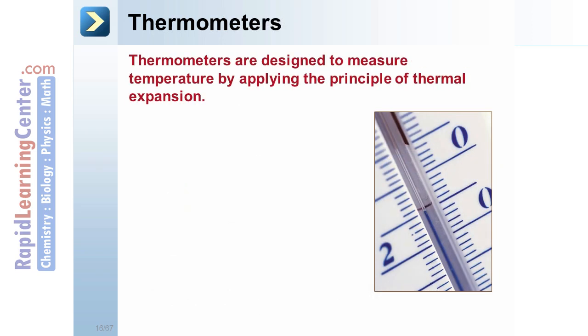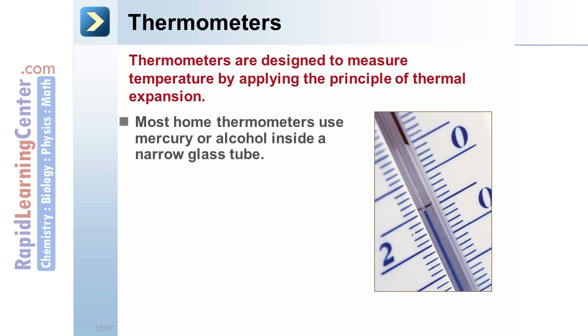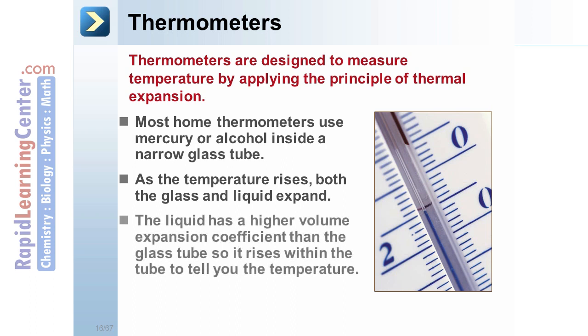Thermometers. Thermometers are designed to measure temperature by applying the principle of thermal expansion. Most home thermometers use mercury or alcohol inside a narrow glass tube. The alcohol may be colored so that it looks red. As the temperature rises, both the glass and the liquid expand. However, the liquid has a higher volume expansion coefficient than the glass, so it rises within the tube to tell you the temperature, which you can read from a scale that's printed on the outside.